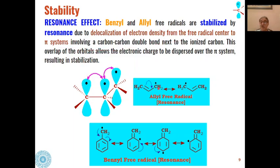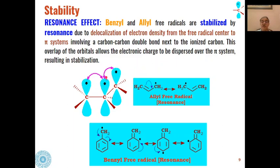For example, in the allyl free radical, one electron goes to one position and the other to another, creating resonance between the system. This is a resonance hybrid of two structures. Because of this resonance, the allyl free radical is more stable. The formation of a carbon-carbon double bond can take place either at one end or the other — resonance is possible in both cases.